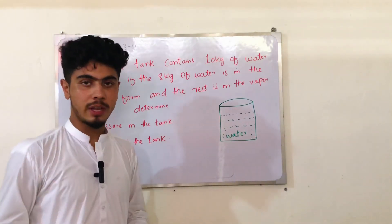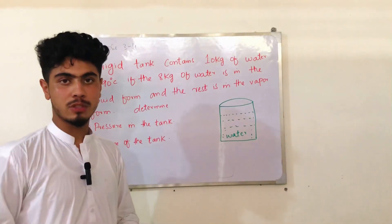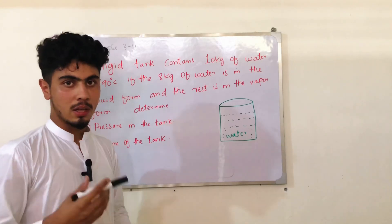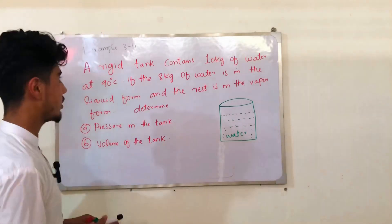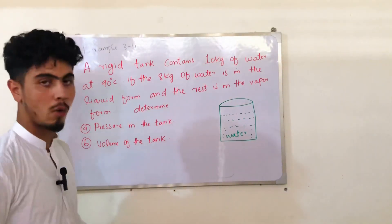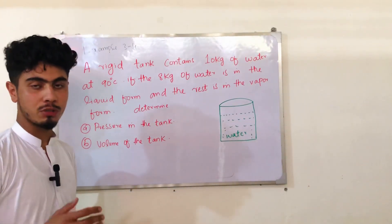Bismillah ar-Rahman ar-Rahim. Example 3-4 Thermodynamics Chapter 3 by Yunus Cengel. This example is related to property tables. The problem statement is that a rigid tank contains 10 kg of water.